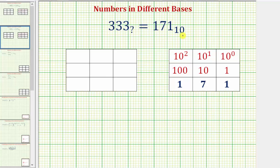So in an expanded form, we can write 171 base 10 as one times 100 plus seven times 10 plus one times one, which again is 100 plus 70 plus one, which equals 171 base 10.